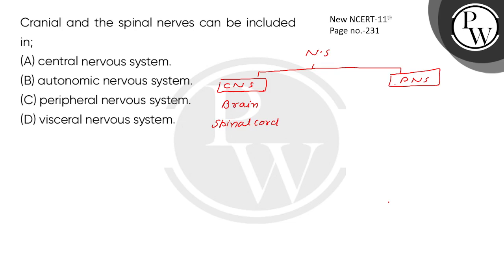Afferent and efferent. Afferent nerve fibers transmit the impulse from tissue or organ to central nervous system. Let's write here, afferent.